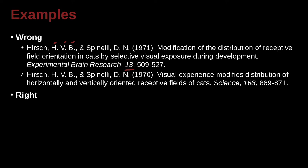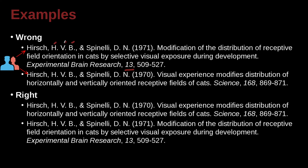So we've got two entries here, and we run into a special problem: the exact same names in different entries — Hirsch HVB and Spinelli DN — two different papers by the exact same authors. How do we order this in our list? We first go by the names, and when we run out of names, we go by the next bit of information, which is the date. 1970 is before 71, so that's how we do it. First author, second author, and if we run out of authors, we go by the date.